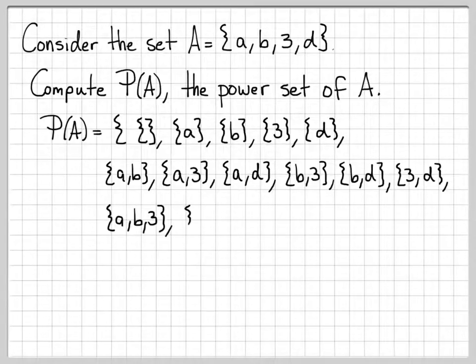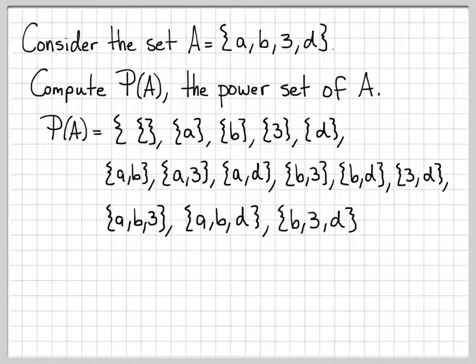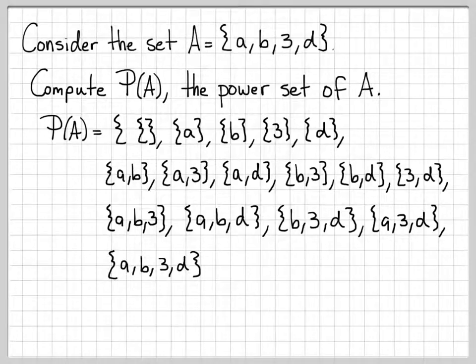And I list all the three element subsets. These are all the different ways that I can choose three elements out of the four things. There are four. And then finally we choose four things out of the set of four. There's only one way to do that: a, b, 3, and d. And this concludes our power set.